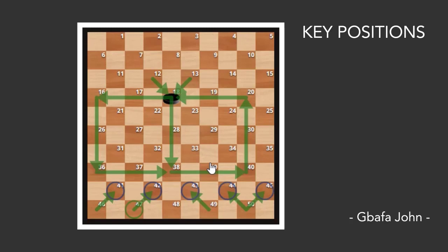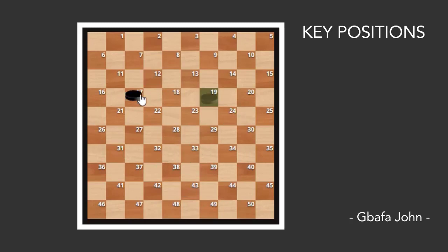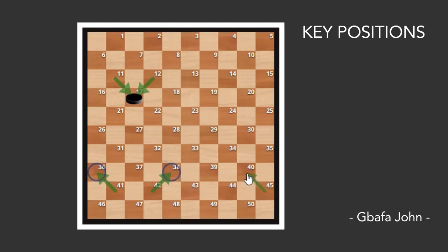Let's look at the third key move. I'm going to show you how to apply them in the game. With the third one, let's say your opponent plays 12 to 17 or 11 to 17. If you have a piece at 41, 41 can move to 36. If you have a piece at 42, 42 can move to 38. If you have a piece at 45, 45 can move to 40. And if you have a piece at 34, 34 can move to 29.